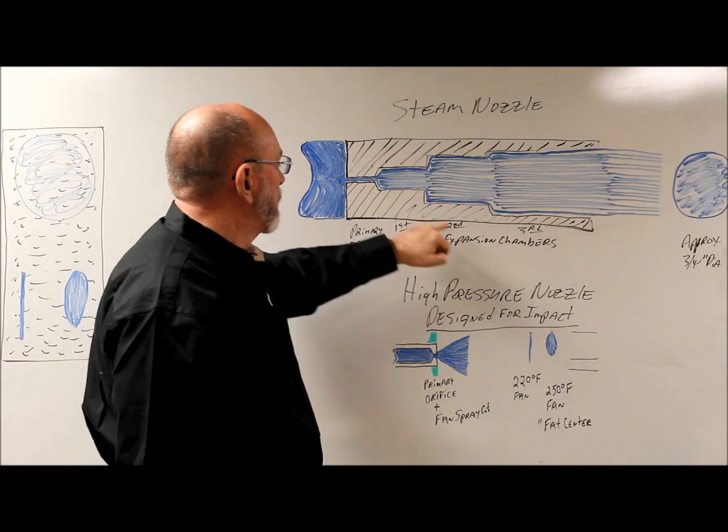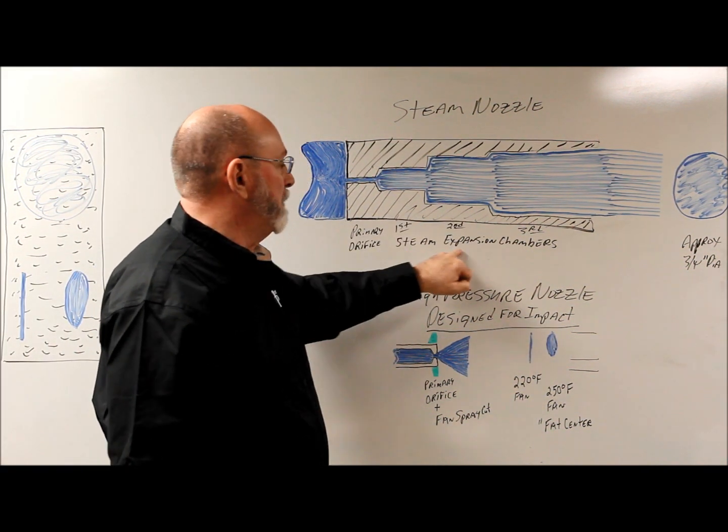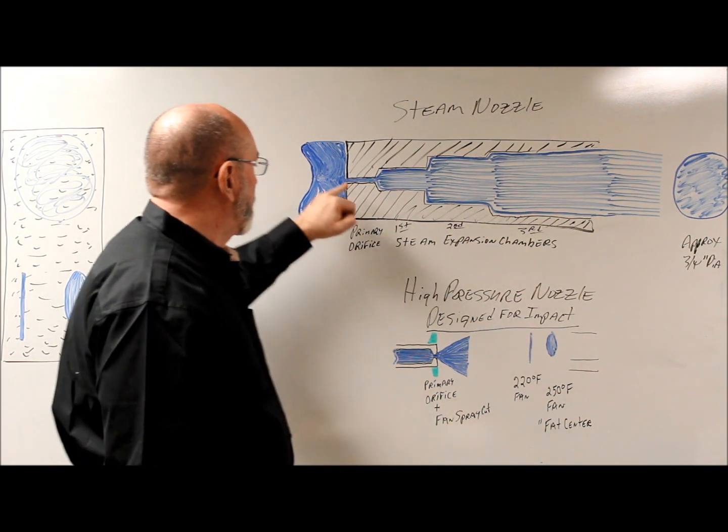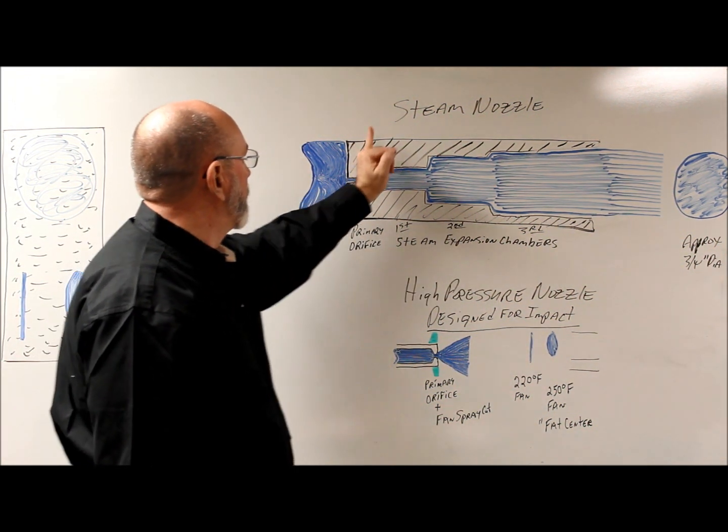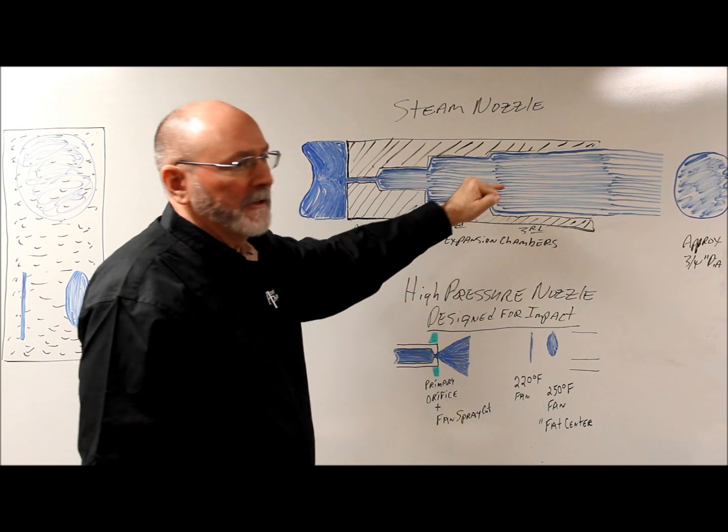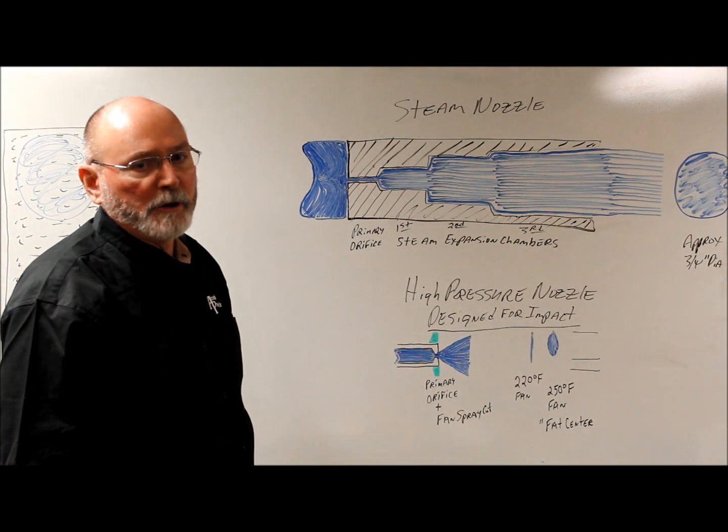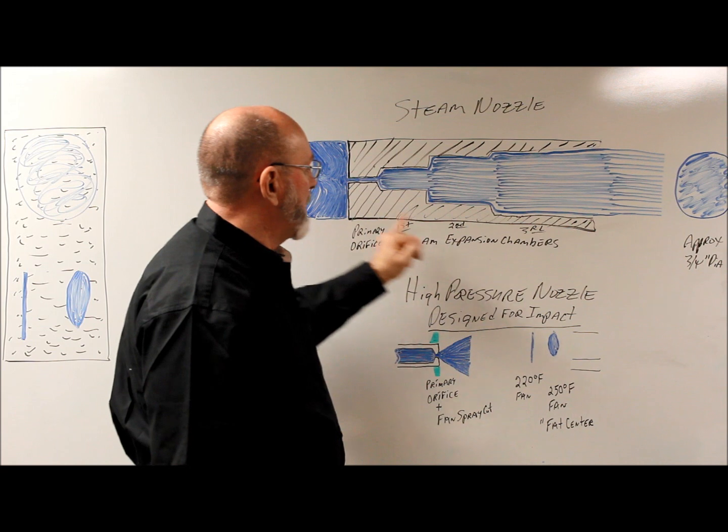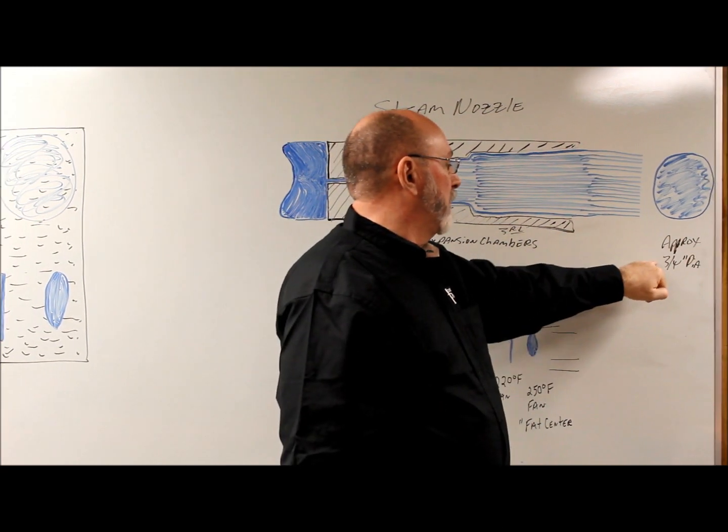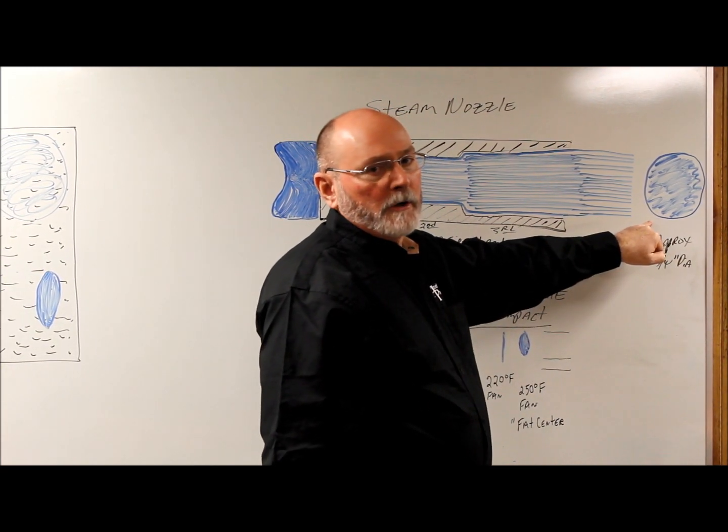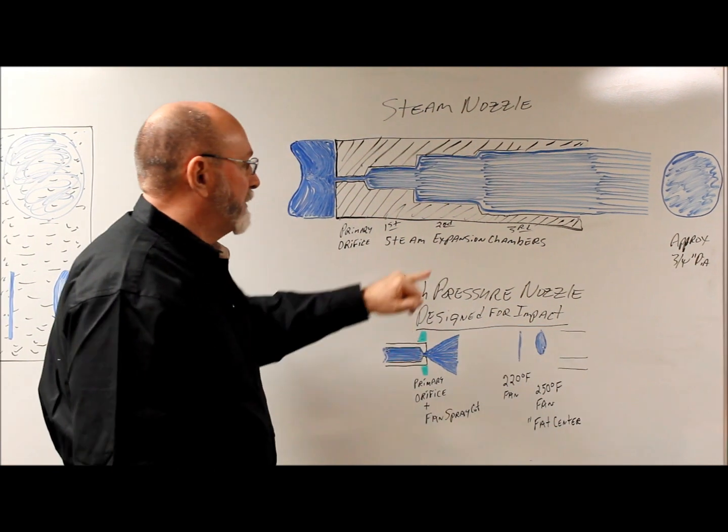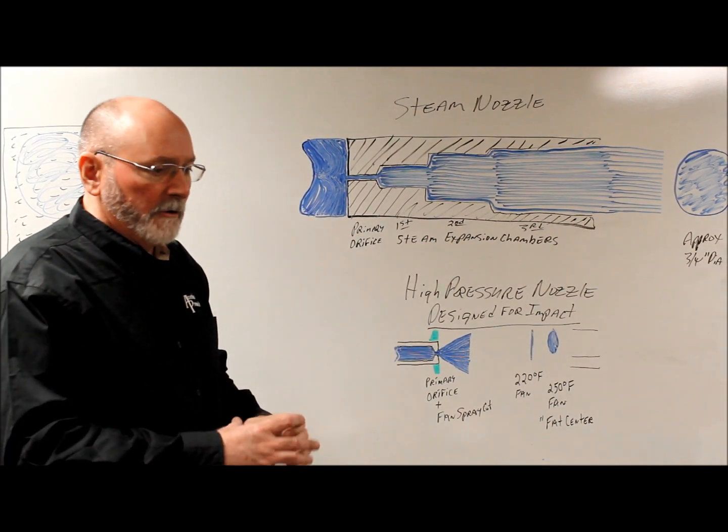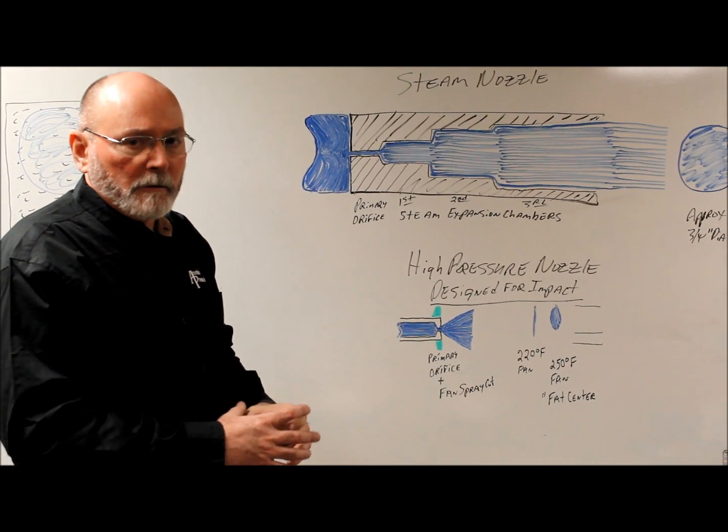Then we have our first, second and third steam expansion chambers. If we just had this orifice and we cut the nozzle here it would be just like a zero degree nozzle from high pressure. But by adding these chambers in here we can take that and get to approximately three quarter of an inch diameter of steam. And that steam can be used, like I say in the beginning, to dissolve grease, completely dissolve it.